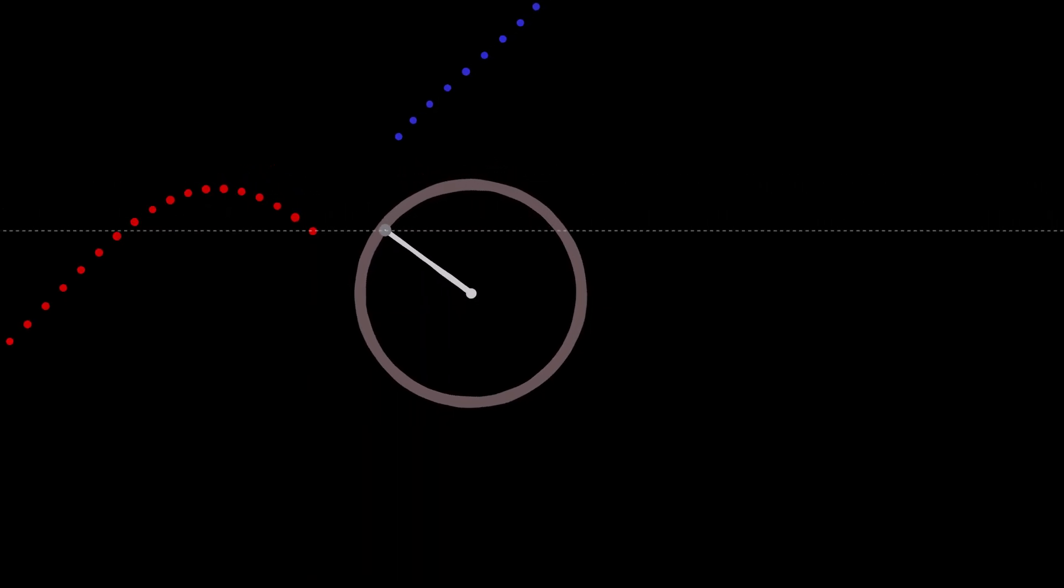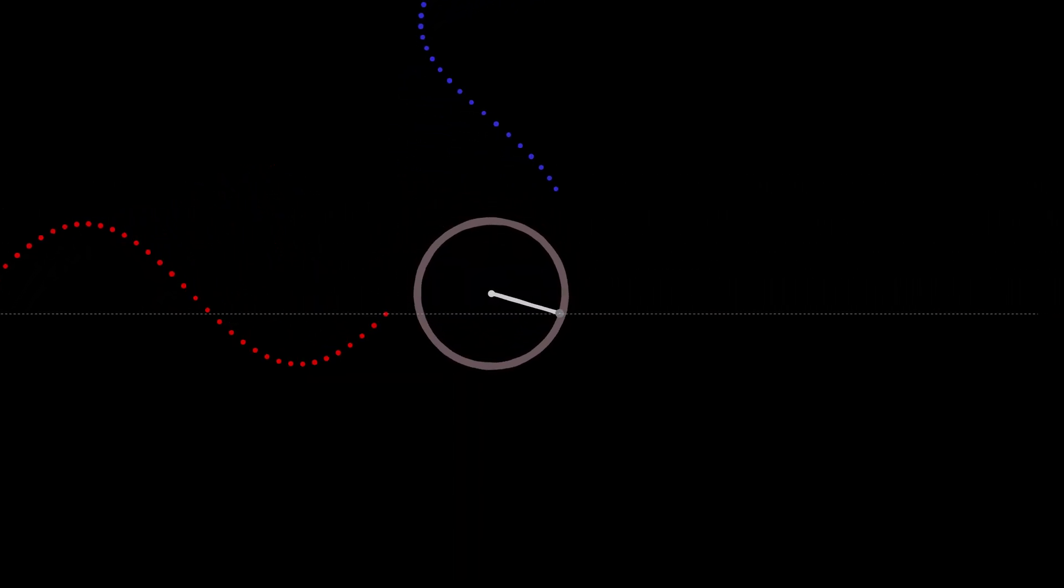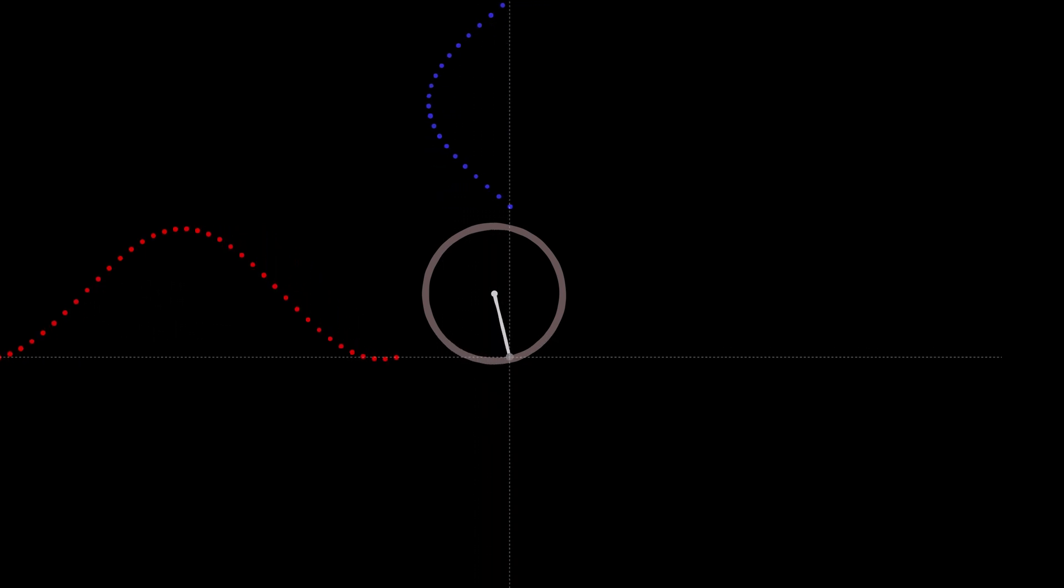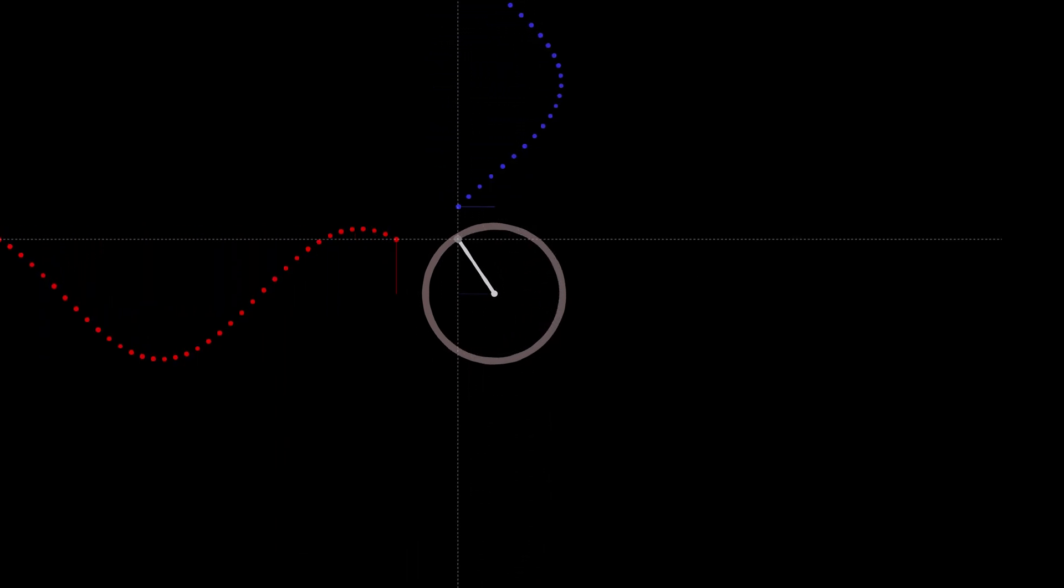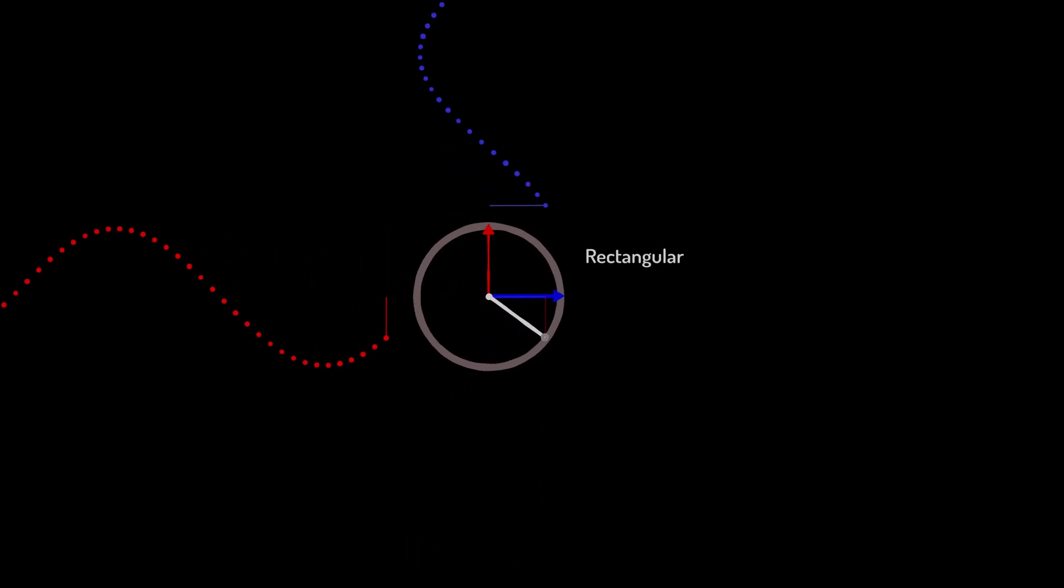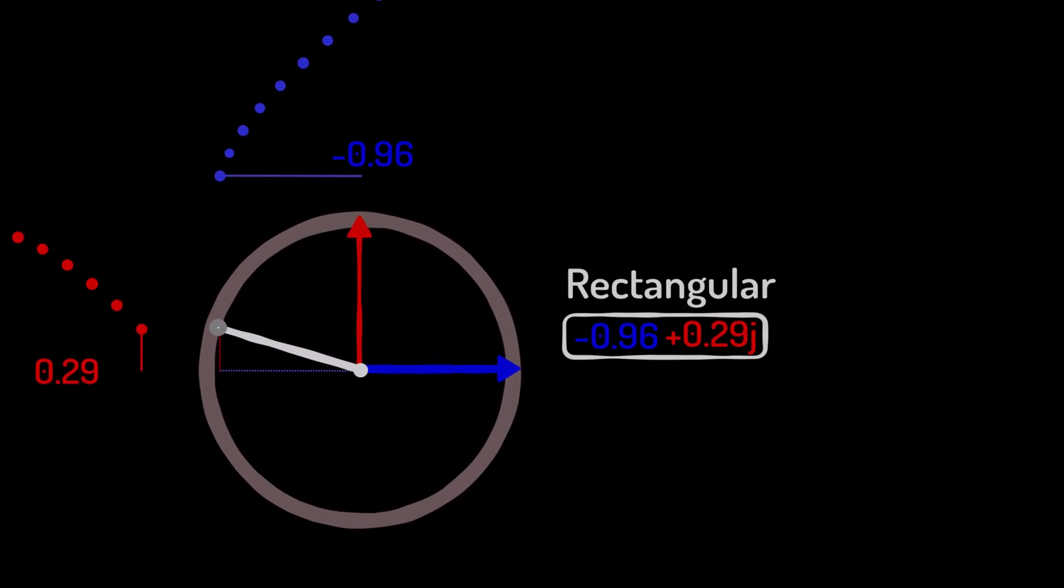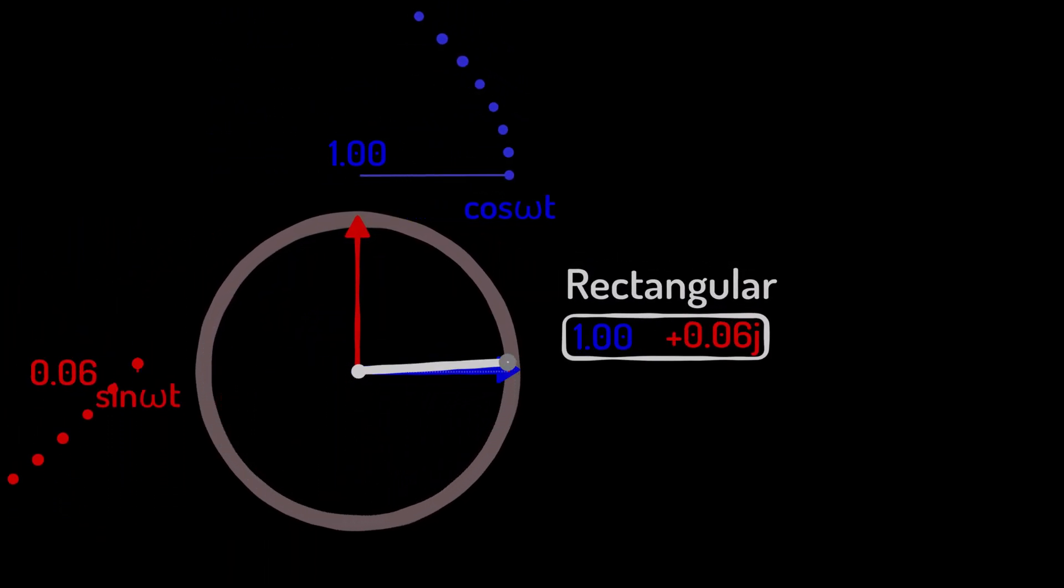As it rotates, it projects a sinusoidal wave sideways and a cosine wave upwards. At any point, the position of the rotating phasor is mapped in two-dimensional space by the cosine and sine functions.